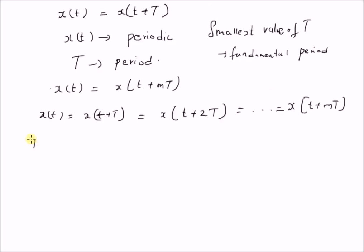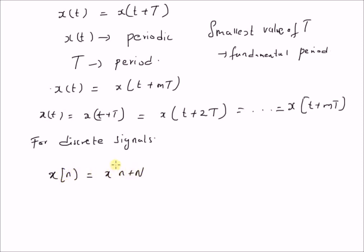Similarly, for discrete signals, x[n] is equal to x[n + N], where N is a positive integer. Then x[n] is a periodic signal with period N.